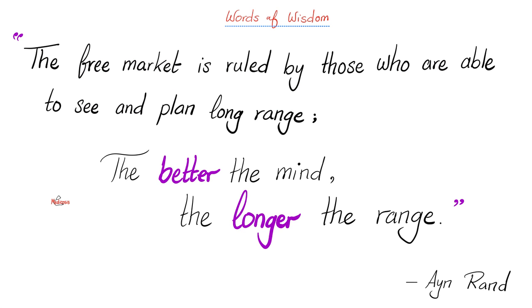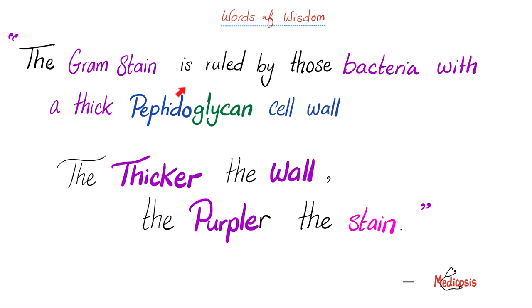The gram stain is ruled by those bacteria with thick peptidoglycan cell walls. The thicker the wall, the more purple the stain.